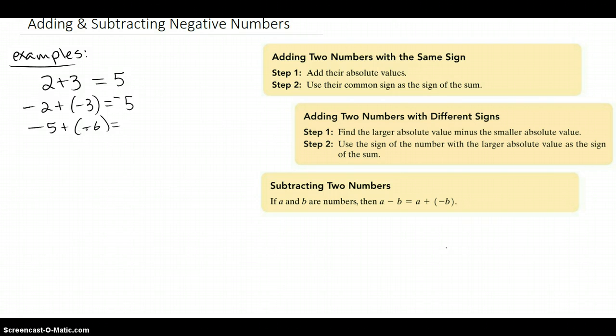So what would this one be? Negative 11. We're going to add the 5 and the 6 and use the common sign. It makes sense because if you're $5 in the hole plus $6 in the hole, that would give you $11 in the hole. I always like to think of logic when adding negative numbers.